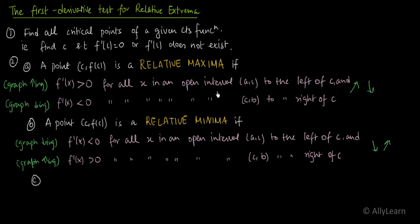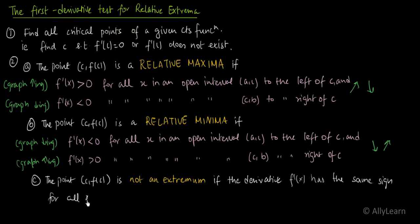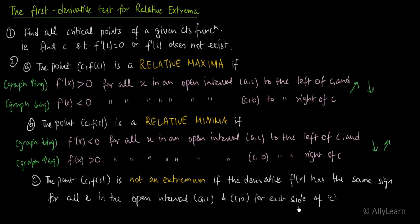One more important thing: if to the left and right of c the function is both increasing or both decreasing, then the point will not be an extremum. The point (c, f(c)) is not an extremum if the derivative f'(x) has the same sign for all x in both open intervals (a, c) and (c, b) on each side of c. In other words, if the sign of the derivative is the same on both sides of c, it is not an extremum point.